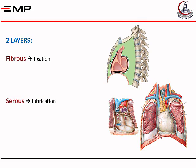The pericardium is made of two layers. An outer, tough, fibrous layer called fibrous pericardium, which helps to fix the heart and prevent its overexpansion. And an inner serous layer, similar to the pleura and peritoneum, that helps lubrication during contraction.